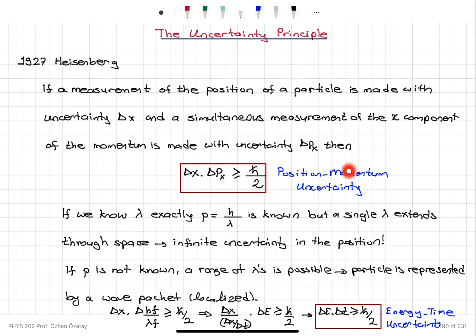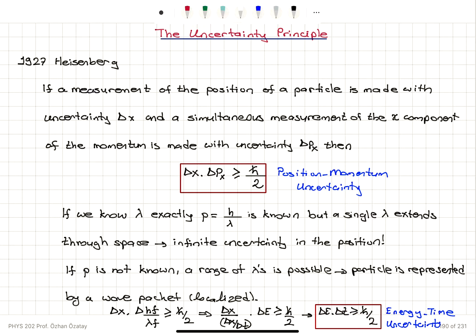Looking at position-momentum uncertainty, the momentum can be written as h over lambda. If we multiply the top and bottom by frequency, delta hf over lambda f multiplied by delta x is greater than or equal to h-bar over 2. That gives us delta x times delta E, because delta hf is delta E, and for lambda times f we have delta x divided by delta t. That means delta E times delta t is greater than or equal to h-bar over 2. This is known as energy-time uncertainty.